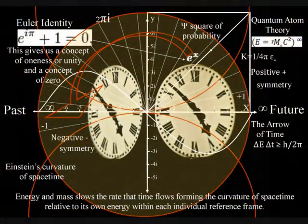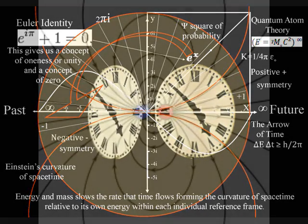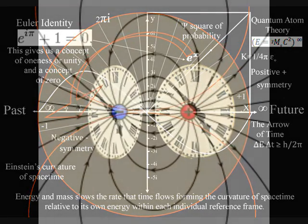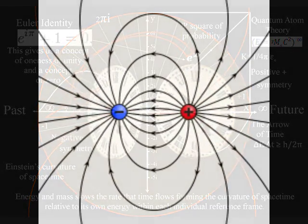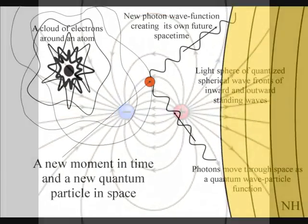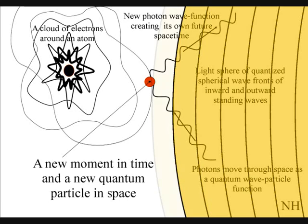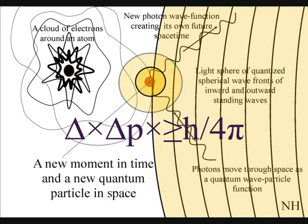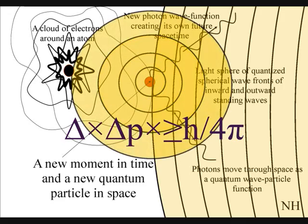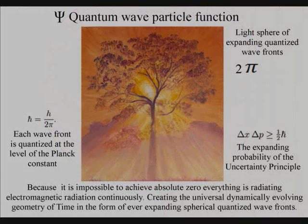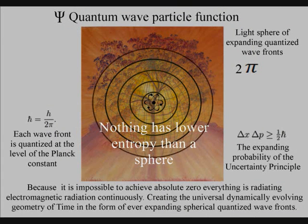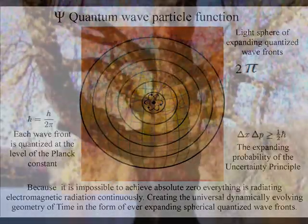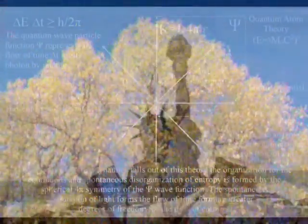Therefore, gravity is a secondary force to the electromagnetic force because time is being formed photon by photon. Where some theories see disunity, disharmony, and chaos, this theory sees oneness, unity, and harmonics that can only be formed by one universal process of spherical symmetry forming and breaking. This organization is formed by the quantum wave particle function or probability function having spherical symmetry. As the energy levels cascade down, it forms greater degrees of freedom for the disorganization of entropy that we have in the second law of thermodynamics.